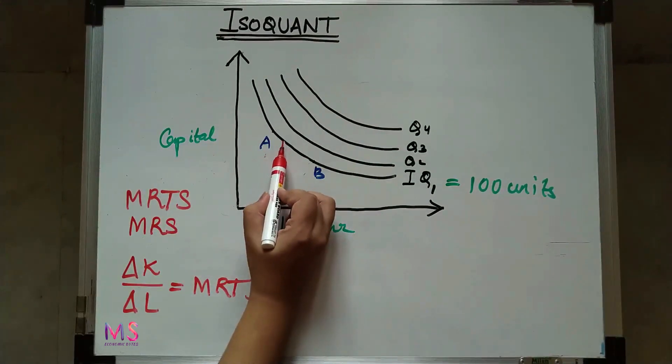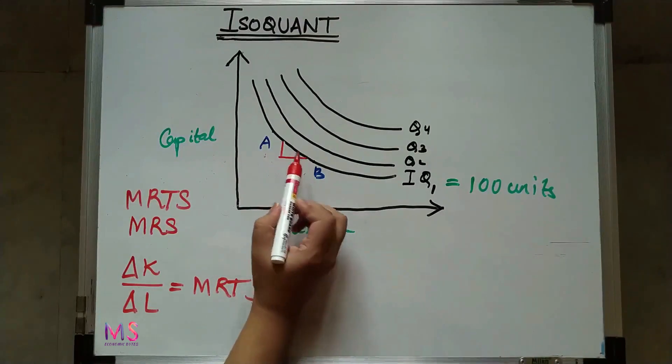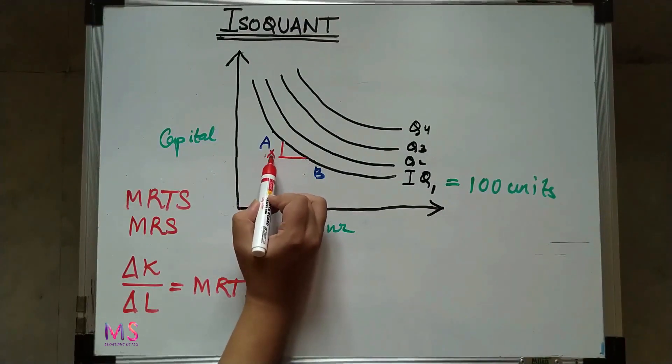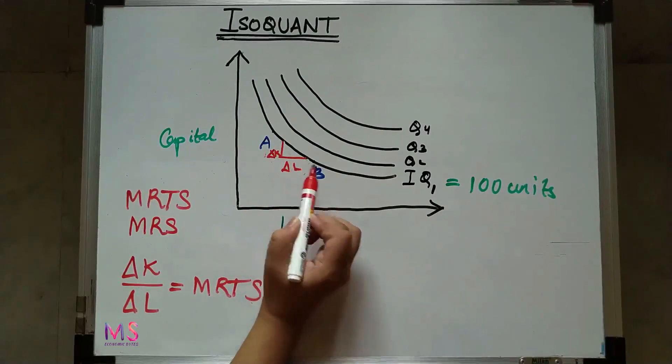Diagrammatically, you can show it like this: this is delta K and this one is delta L.